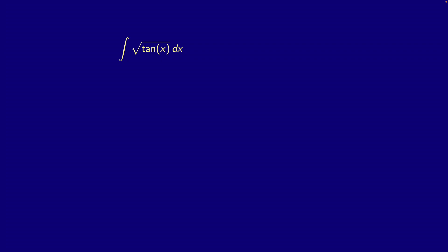First we sub in u for tan(x), so du is sec²(x) dx, and we get u² plus one in the denominator from the secant and tangent identity. Then we sub in s for √u, so ds is du over 2√u, and we get this expression.